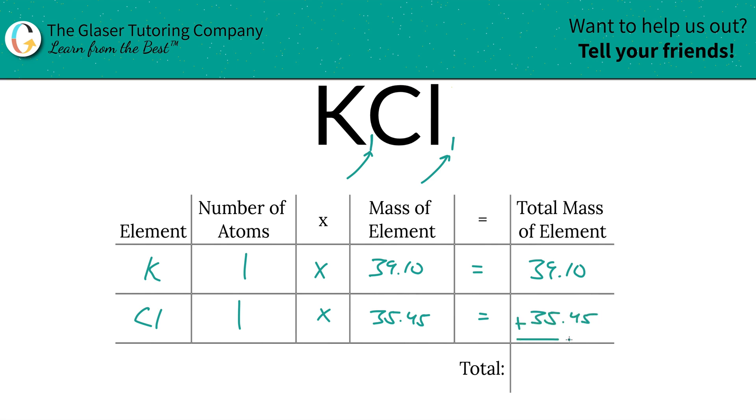Now that my hand is spazzing. Anyway, add this column together and you will arrive at the total mass of the entire compound. So 74.55. And the units are AMU, because we're solving for molecular mass, right? So those are the units, atomic mass units.